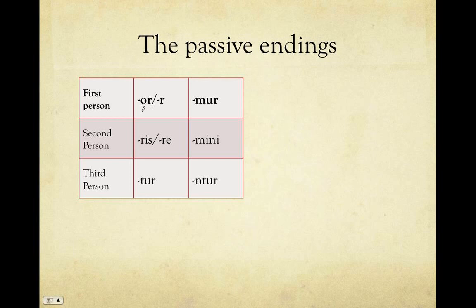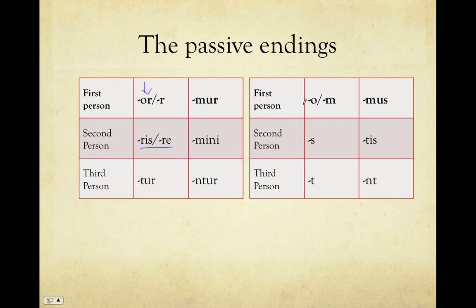All you really need to do is learn a new set of endings. Those endings are: if your active voice tense ended with 'o' in the first person singular, we just add an 'r'; if it was an 'm,' we use 'r.' So: r, ris or re, tur, mor, mini, untur. These passive endings — r, ris, tur, mor, mini, untur — are used in all of the tenses. To compare, the active endings you already know are: o/m, s, t, mus, tis, unt.